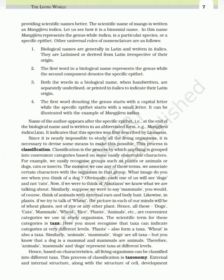If we think of mammals, we think of animals with external ears and body hair. Likewise, in plants, if we think of wheat, the picture is of wheat plants, not rice or any other plant. All these categories — dogs, cats, mammals, wheat, rice, plants, animals — are convenient categories we use to study organisms. The scientific term for these categories is taxa. Taxa can indicate categories at very different levels — plants form a taxa, wheat is also a taxa, and animals, mammals, dogs are all taxa but at different levels. Hence, based on characteristics, all living organisms can be classified into different taxa, and this process of classification is called taxonomy.